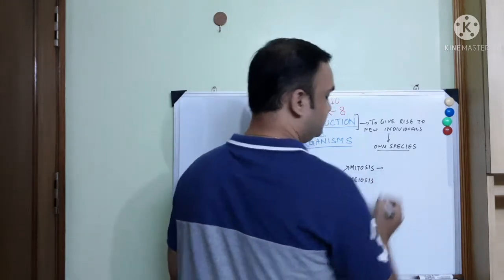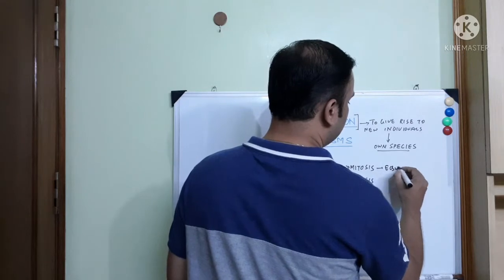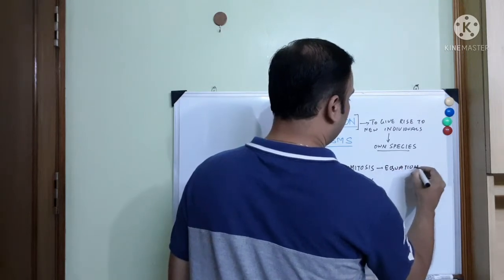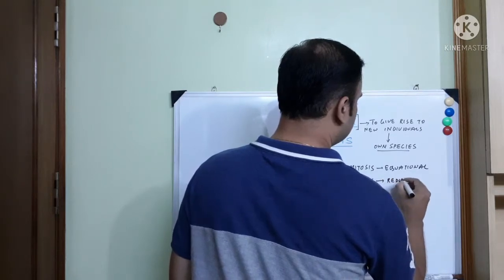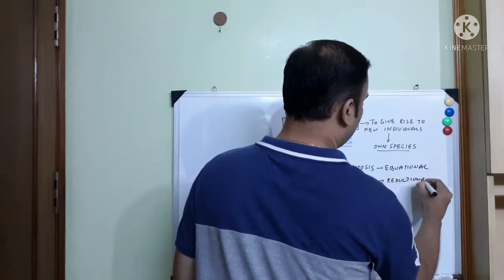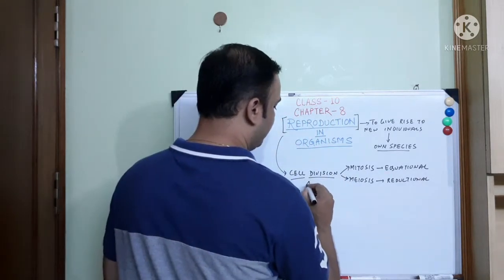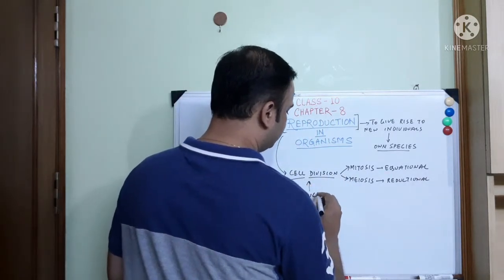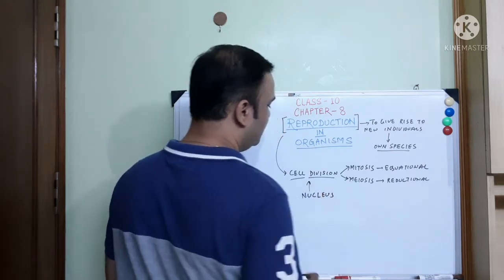In mitosis, it is called equational division because the chromosomes are equally divided. In meiosis, it is called reductional division. To carry out cell division, nucleus is important. Nucleus plays a very vital role in the process of cell division.